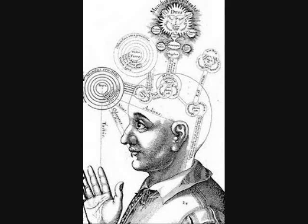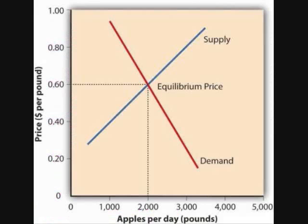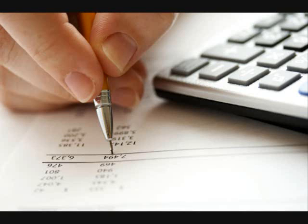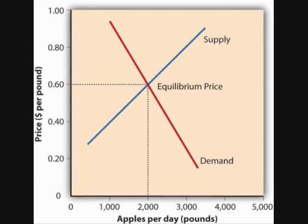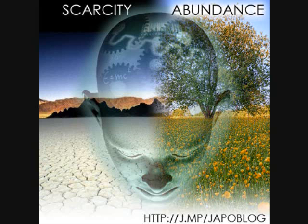Starting with our assumptions on the subjective mechanism of human behavior, we can understand why equilibrium price will approximate cost. And, given this baseline understanding of the primary law of equilibrium price, we can understand why price deviates from the cost principle in cases of scarcity.